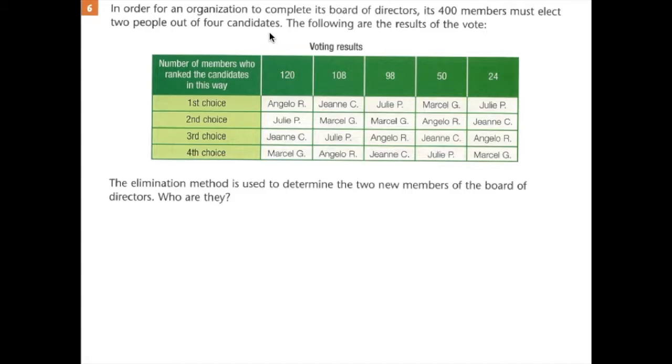The two people doesn't matter the order in which they're selected. First choice isn't much better than second choice. That's going to come up later on. The elimination method is used to determine the two new members of the board of directors. Who are they?